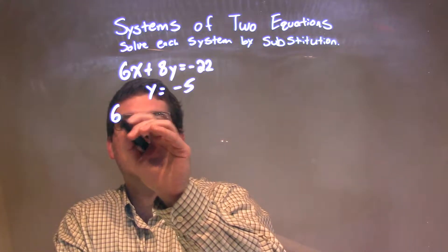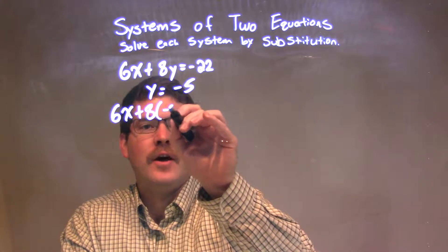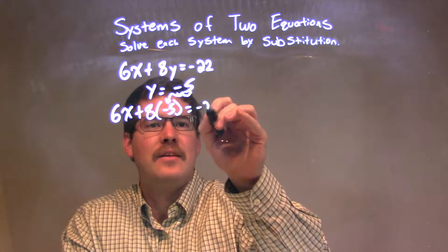If I rewrite my first equation: 6x plus 8, and instead of y, I'm going to put a negative 5 there. This little negative 5 goes right in, equals that negative 22.